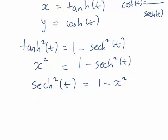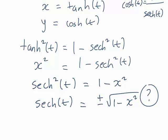Which means that normally what we would do algebraically is say sech of t must be plus or minus the square root of 1 minus x squared. But is this the case here? I'm putting a question mark there.